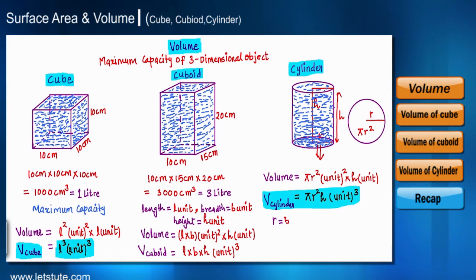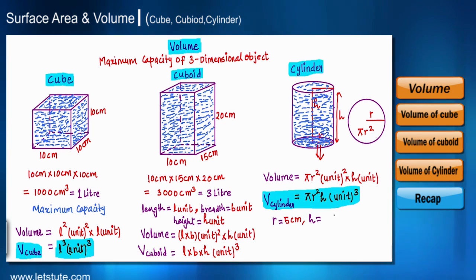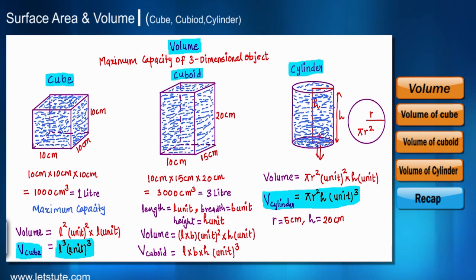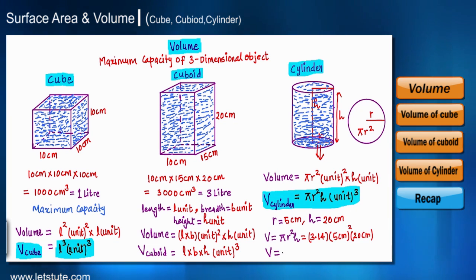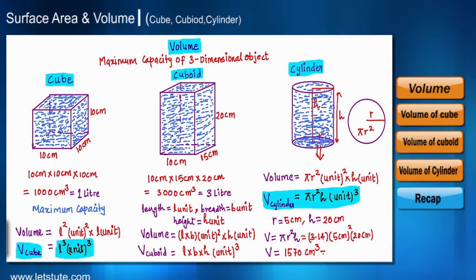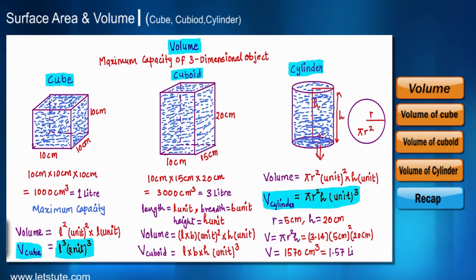Let's solve a problem: a right circular cylinder has radius r equals 5 centimeter and height 20 centimeter. Applying the formula, the volume is 1570 centimeter cubed, or 1.57 liters.